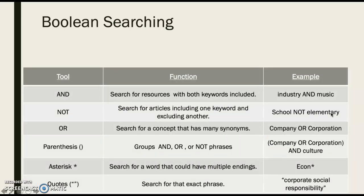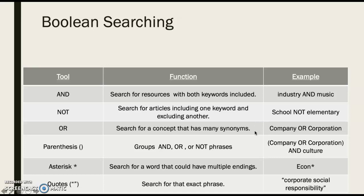Here's a chart that helps make Boolean searching a little clearer. AND requires that both keywords come back in your search results — so 'industry AND music' means you have to have both of those. The NOT connector I don't use a whole lot, but it can be useful; be aware that you will lose articles that have that word in them. A good example would be 'school NOT elementary' if you're doing research on college or high school. The OR connector I use a lot — this is if you're not totally sure of the right word to use. You can list out OR connectors; 'company OR corporation' is an example, because the database will only give you articles with the words that you put in.